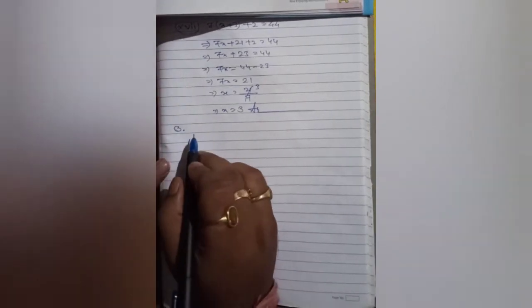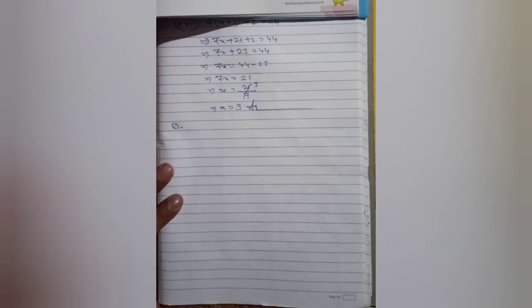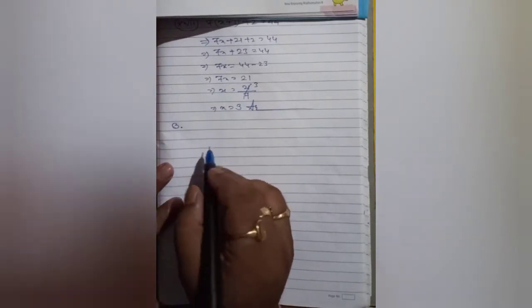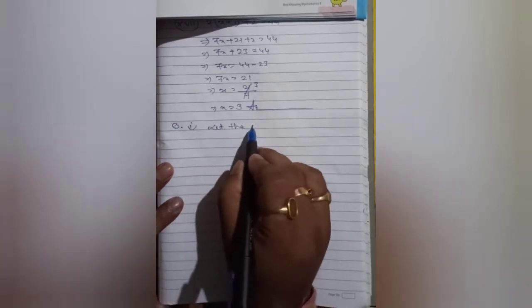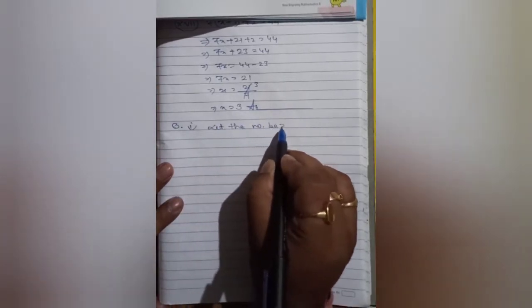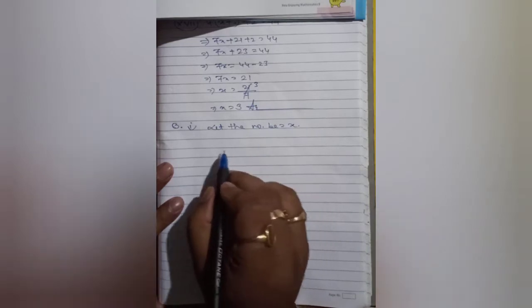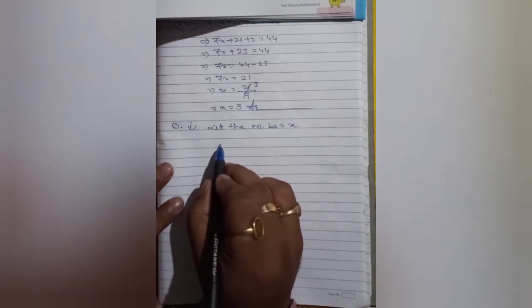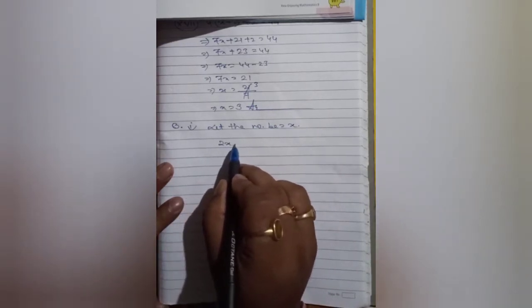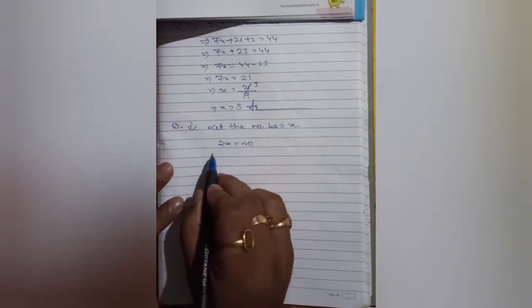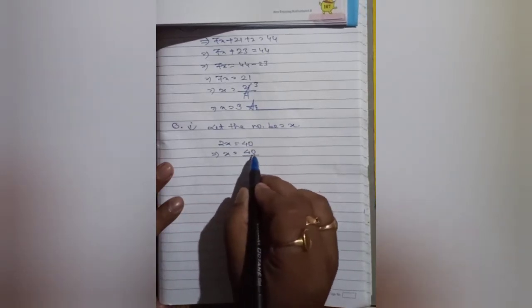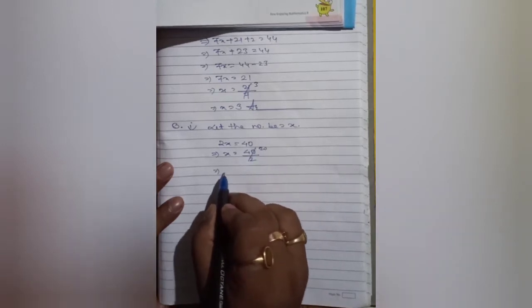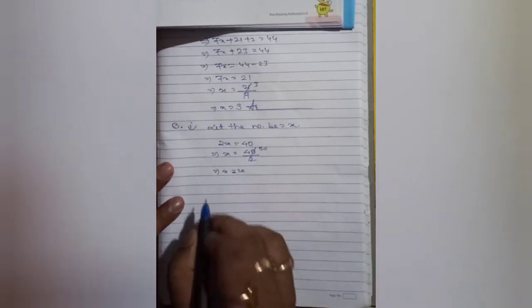Twice a number is equal to 40. Let the number be x. Twice of x equals 40, so x equals 40 by 2, that is 20. x equals 20.